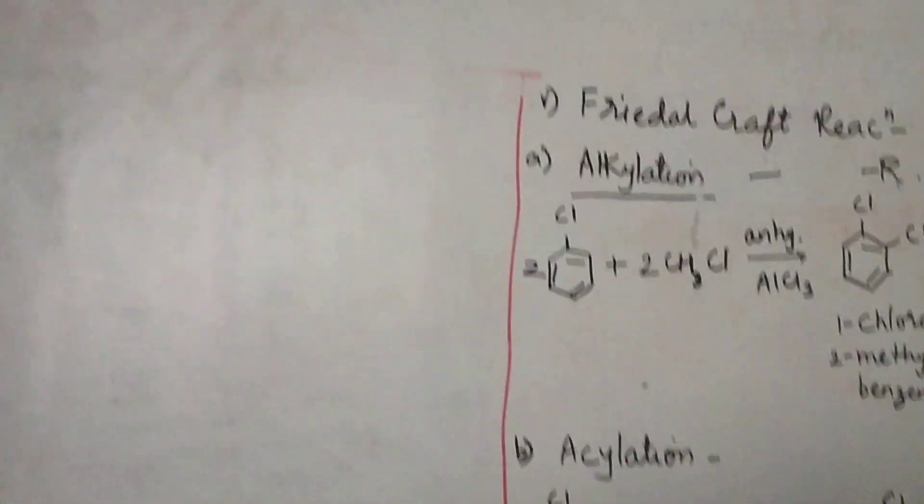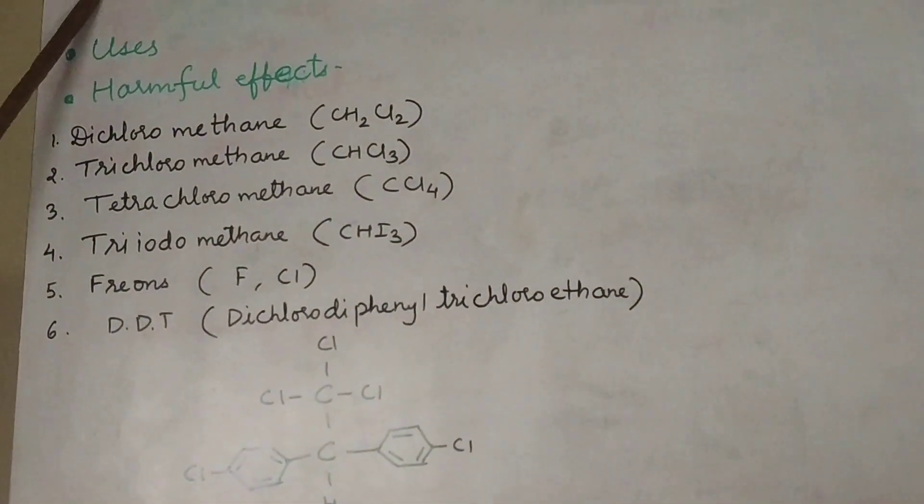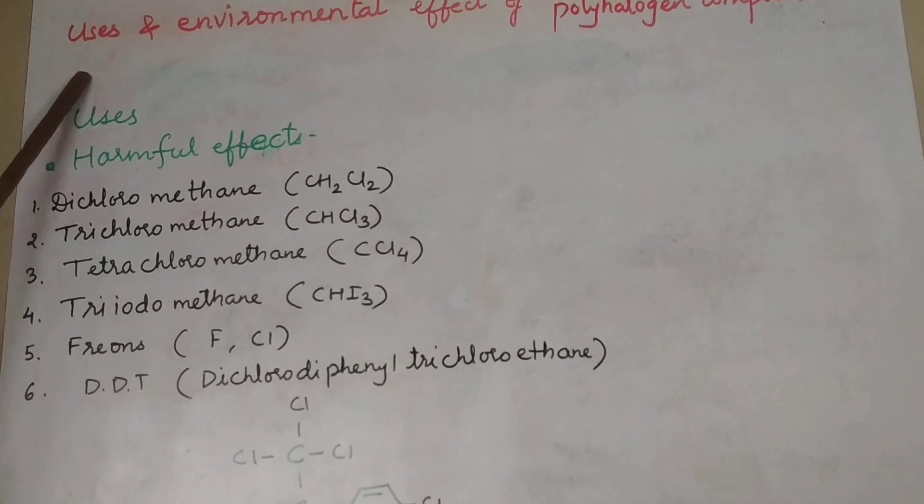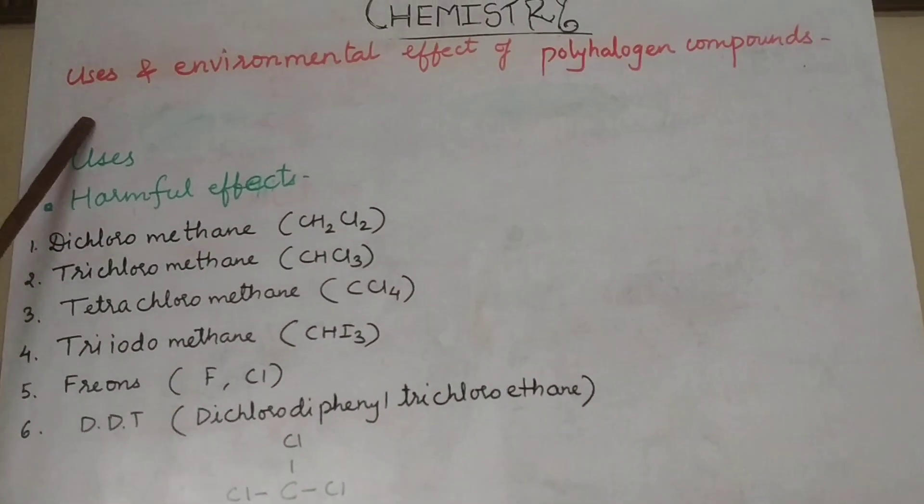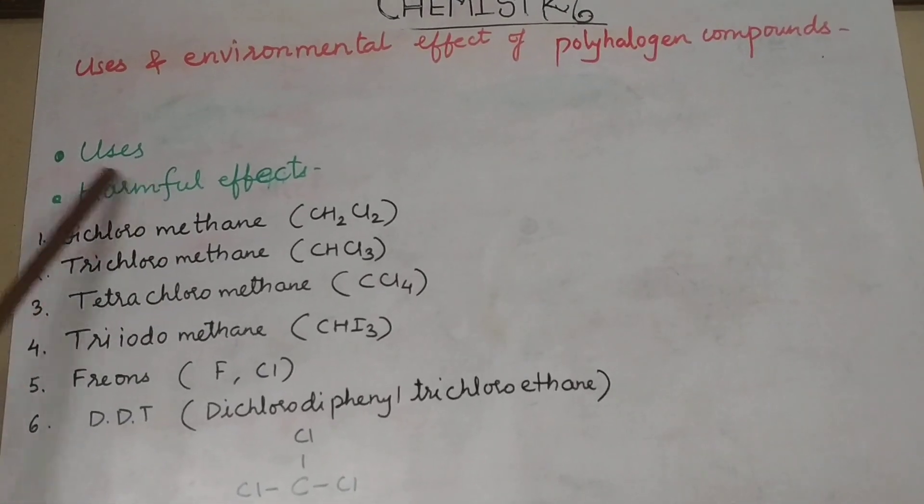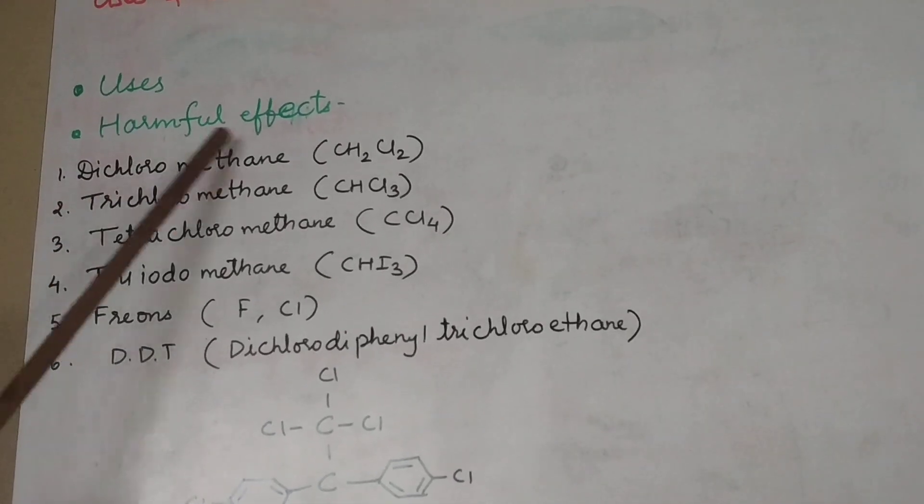Now, we are towards the last point of the chapter. That is, we are going to start with the uses and environmental effects of polyhalogen compounds. So, compounds which are having more than 1 halogen atom in that, they are called as polyhalogen compounds. Now, here we are going to see the compounds in terms of 2 points: uses and its harmful effects.